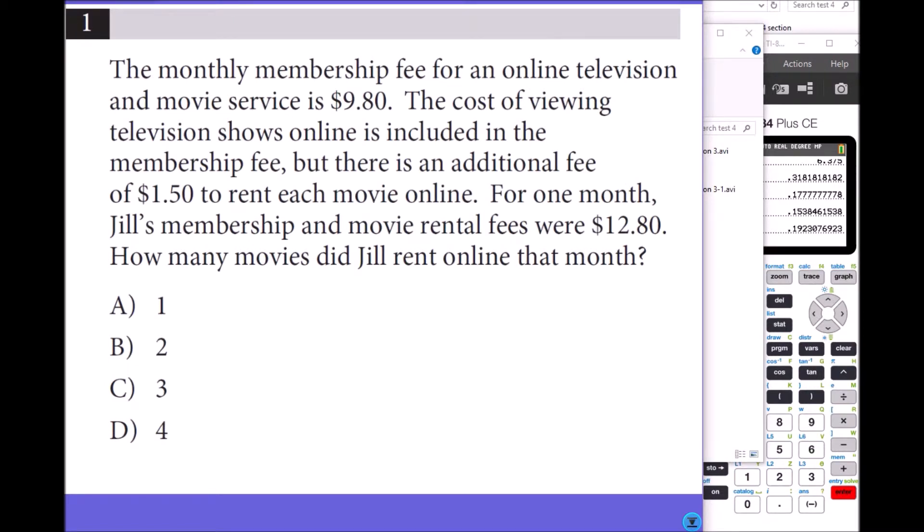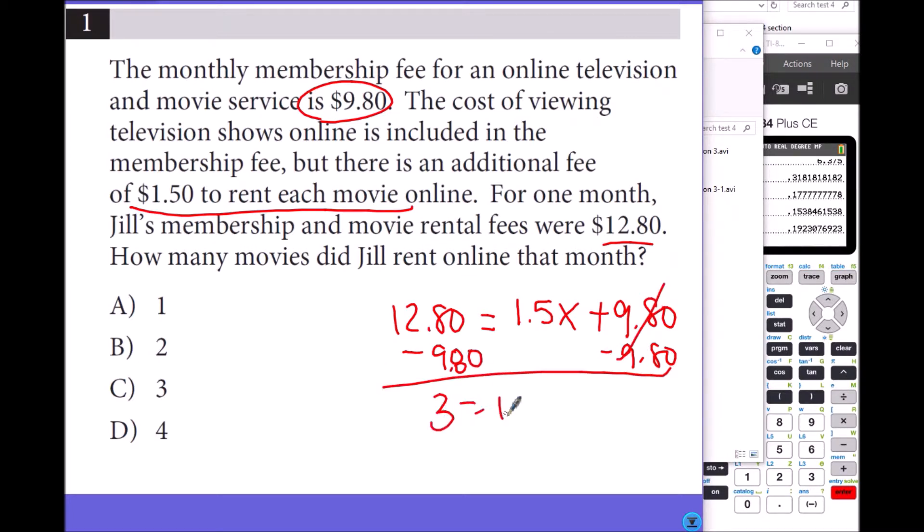Number 1: The monthly membership fee for an online television and movie service is $9.80, so that's a flat fee. The cost of viewing television shows online is included in the membership fee, but there's an additional fee of $1.50 to rent each movie online. The total rental fee was $12.80. How many movies did Jill rent online that month? So if X is the number of movies rented, he has to pay $1.50 each plus the flat membership of $9.80. You subtract $9.80 from both sides to solve for X and get 3 equals $1.50X. When you divide by $1.50 from both sides, you get X equals 2, so two movies.